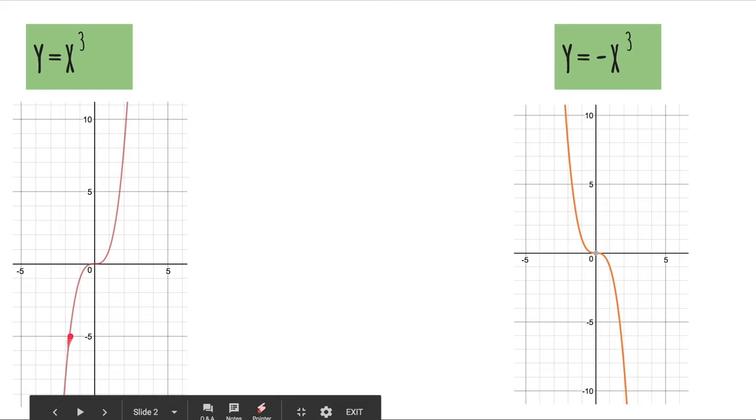So, it starts at the bottom and then it goes up. But y equals negative x cubed. If the x cubed term is negative, it starts up and then it goes down.